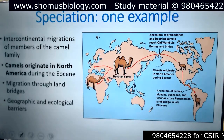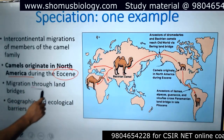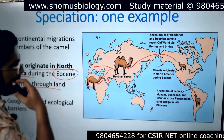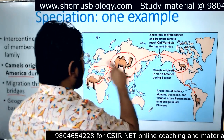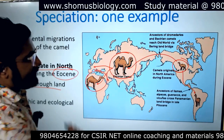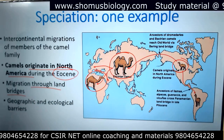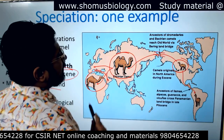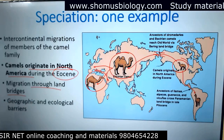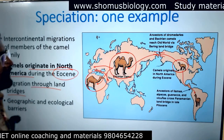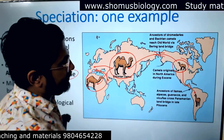One example of speciation is the camels. They originated in North America during the Eocene and migrated through land bridges. They started their journey in North America, migrated to Asia, from there to Africa, and from North America directly to South America. Through the corridors between regions — the Pangea fragments — they migrated and became different types of camels.